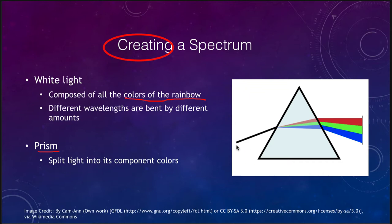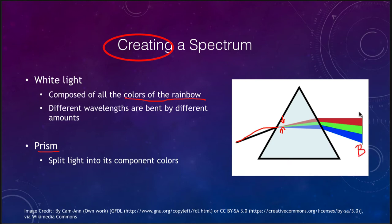We see white light coming in, and each of those wavelengths of light — remember that light has different wavelengths, with blue light having a shorter wavelength and red light having a longer wavelength — each of those is bent by differing amounts. As they cross into the prism, the blue light gets bent more, so we end up seeing blue on one side and red on the other.